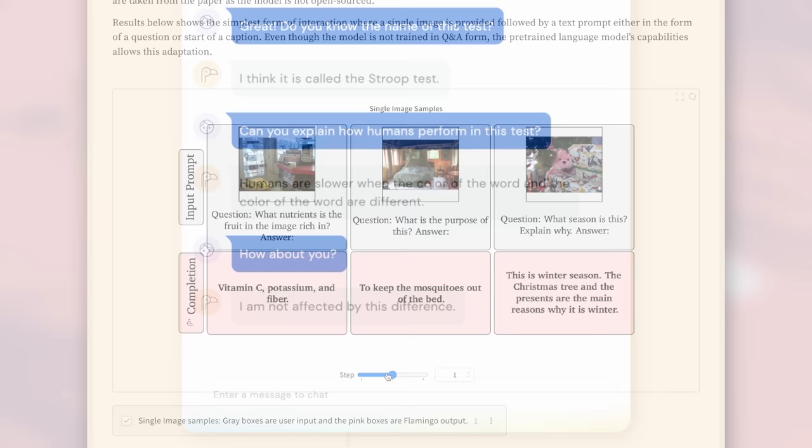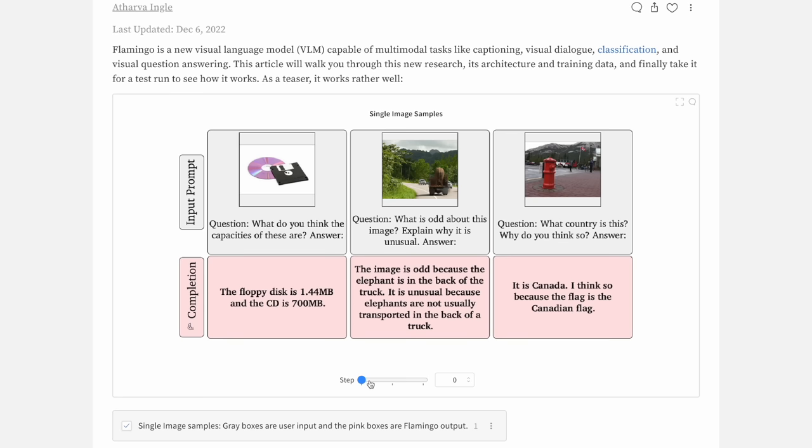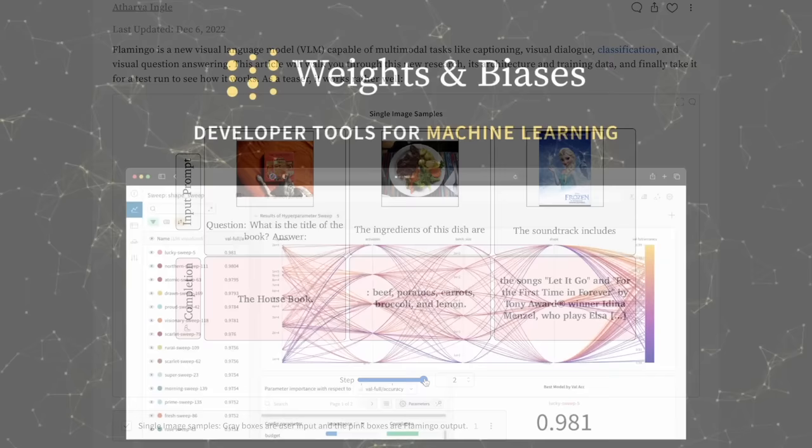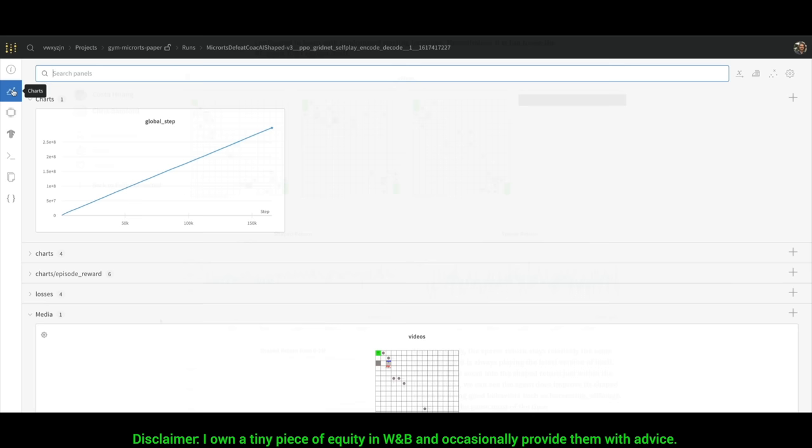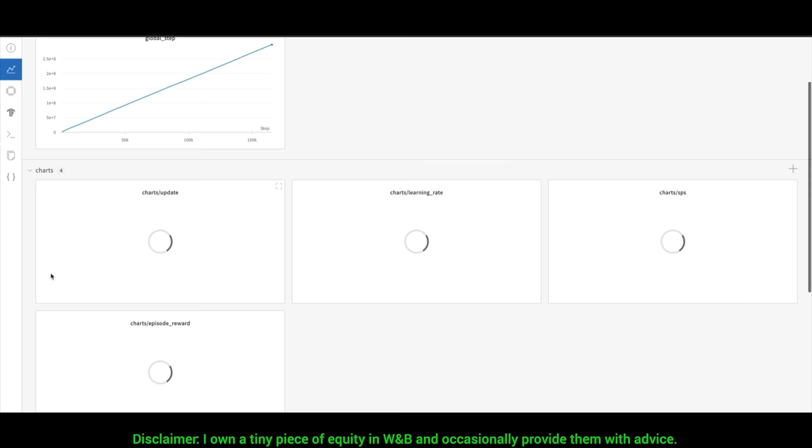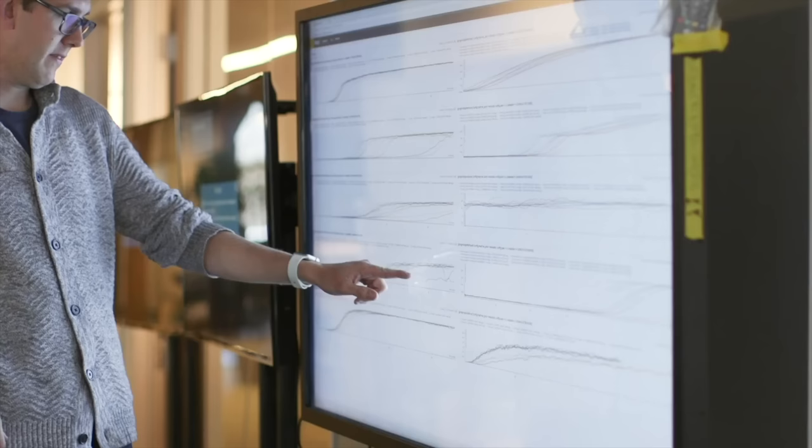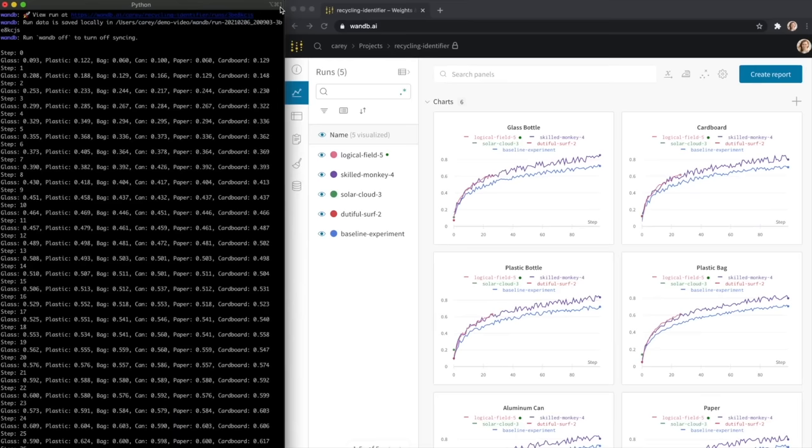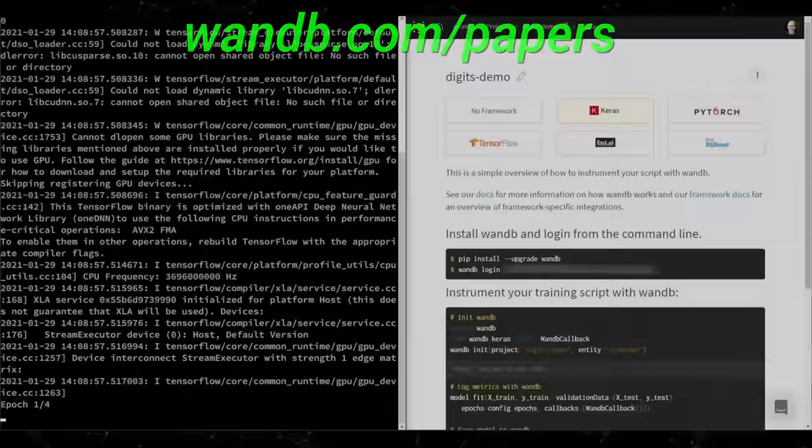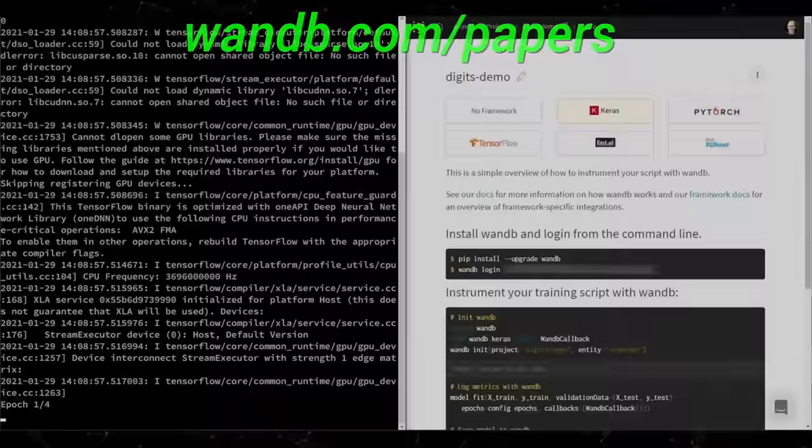What you see here is a report of this exact paper we have talked about which was made by Weights and Biases. I put a link to it in the description. Make sure to have a look, I think it helps you understand this paper better. Weights and Biases provides tools to track your experiments in your deep learning projects. Using their system, you can create beautiful reports like this one to explain your findings to your colleagues better. It is used by many prestigious labs including OpenAI, Toyota Research, GitHub, and more. And the best part is that Weights and Biases is free for all individuals, academics, and open source projects. Make sure to visit them through wnb.com slash papers or just click the link in the video description and you can get a free demo today. Our thanks to Weights and Biases for their longstanding support and for helping us make better videos for you. Thanks for watching and for your generous support, and I'll see you next time!